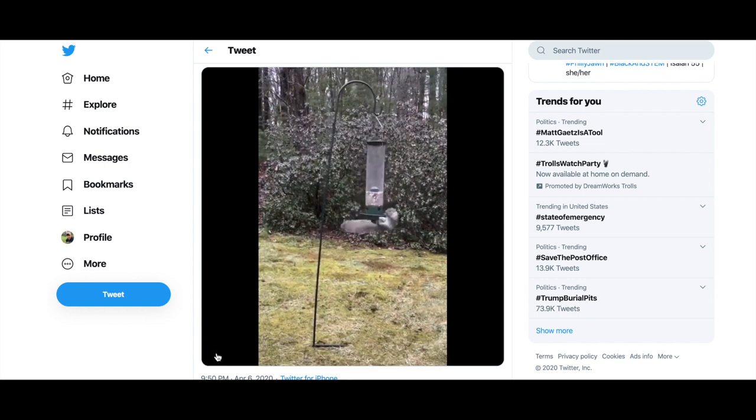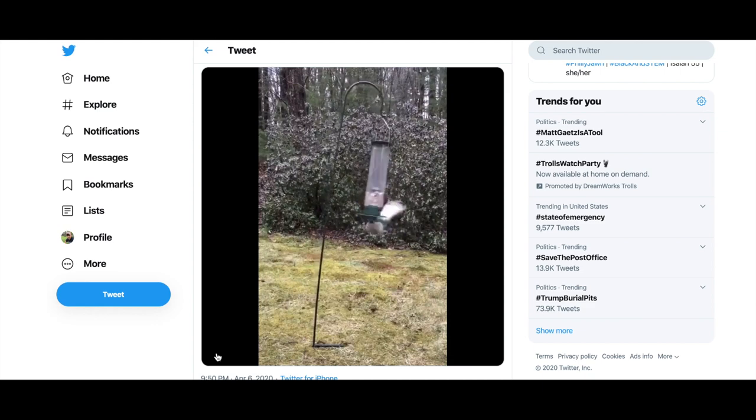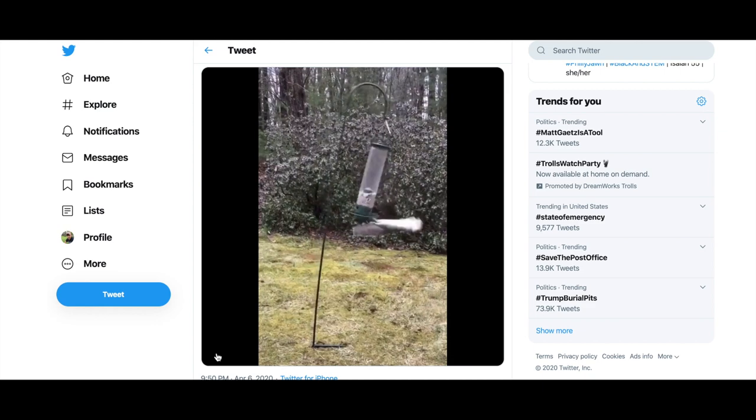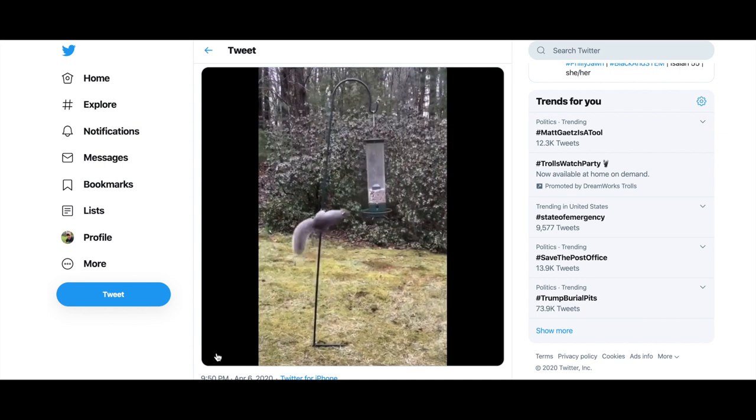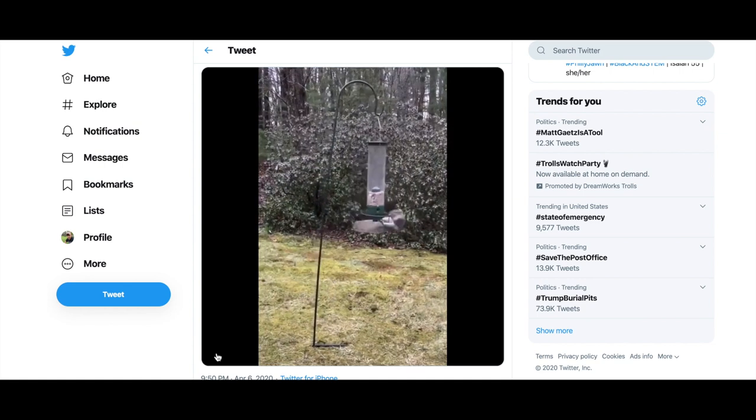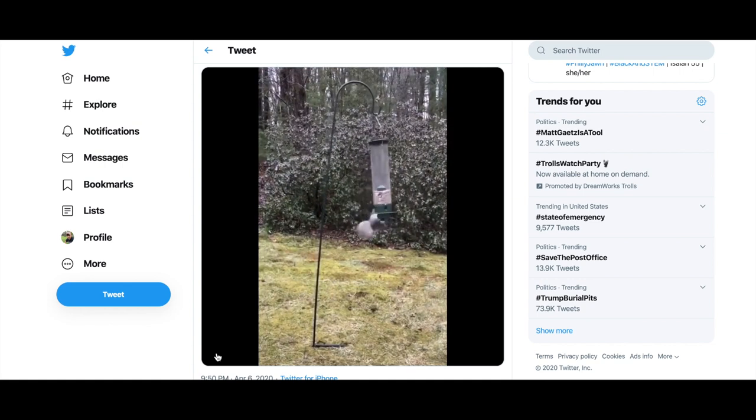So here's a squirrel on this anti-squirrel bird feeder. When the squirrel hits the bottom part of that feeder, there's a motor, and it starts spinning. So here's a squirrel just trying to hang on, and eventually, backwards even, eventually falls off. I want to do this as a circular motion problem, and just kind of see what we can figure out.